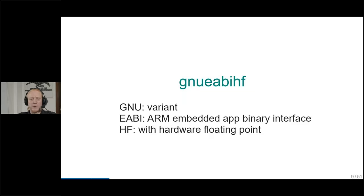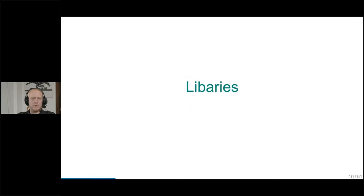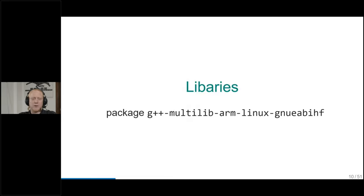On our Raspberry Pi, we need a C++ library. There's a package that sounds promising: the G++ multilib ARM Linux new ABI HF. There's also a second option — we can go to the Raspberry Pi system and copy everything over. This is called the sysroot. The package sounds more promising, so let's try to use that.